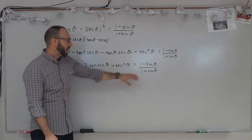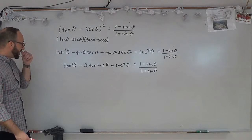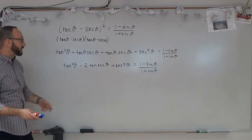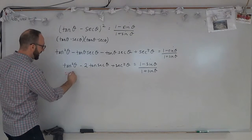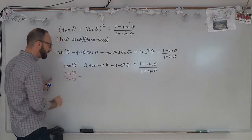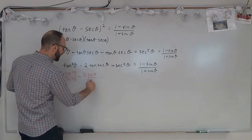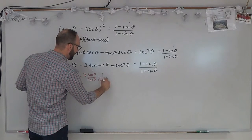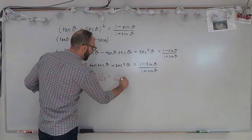The right-hand side of the equation is expressed in terms of sines, so I'm going to rewrite any expression on the left that can be converted into sines and cosines. Tan squared theta becomes sine squared theta over cosine squared theta, minus 2 times sine theta over cosine theta, and secant squared theta is 1 over cosine squared theta.